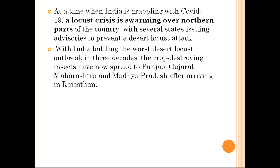The crop-destroying insects have spread to Punjab, Gujarat, Maharashtra, and Madhya Pradesh after arriving in Rajasthan. India is already fighting the COVID-19 crisis, and at this difficult time, these locusts — after 30 years — have returned to our country, destroying crops in Punjab, Gujarat, Maharashtra, Madhya Pradesh, and Rajasthan. The first state attacked was Rajasthan.